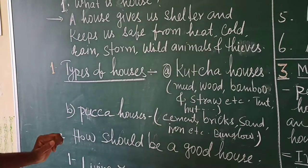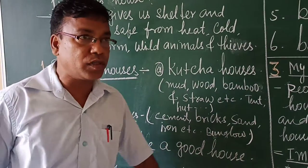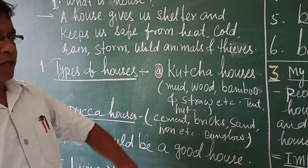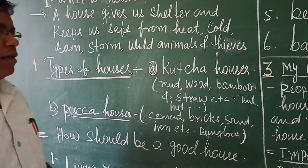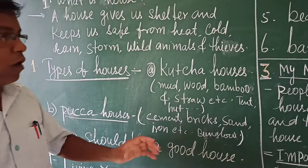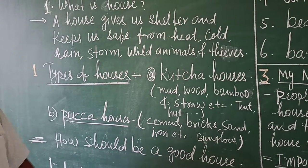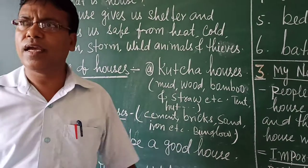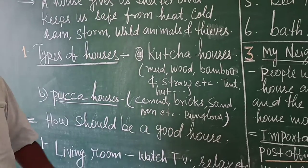Now we can see pakka houses. Pakka houses are mostly found in the city, because people in the city have a different way of living. To make a pakka house they need cement, bricks, sand, iron, and so on. These are the materials used to make a pakka house. Examples include big bungalows and apartments.